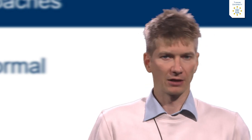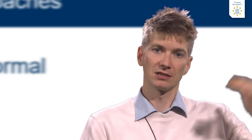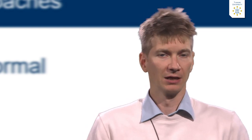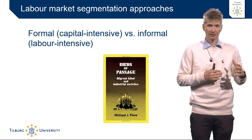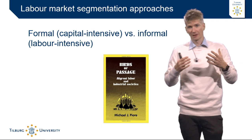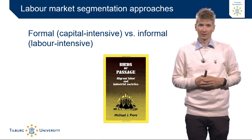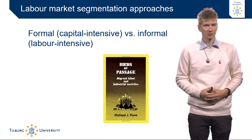According to Michael Piore and other segmented labour market theorists, migration exists because of the secondary labour market, whereby migrants get systematically exploited. But because of the income differential, the secondary labour market is still very interesting and attractive for them to move towards. So that in a nutshell is what segmented labour market theory is about. I hope you enjoyed this knowledge clip.